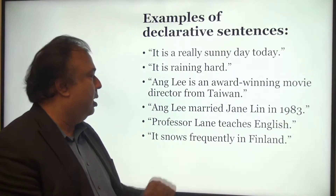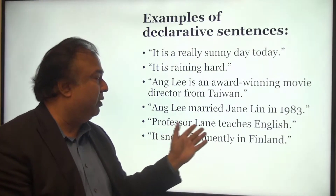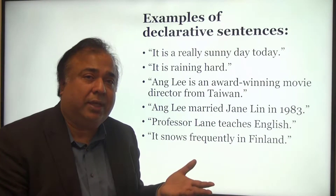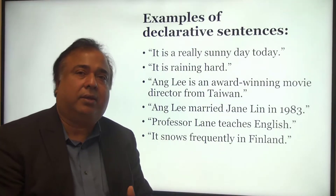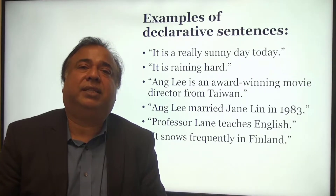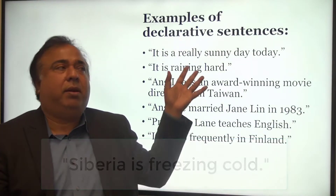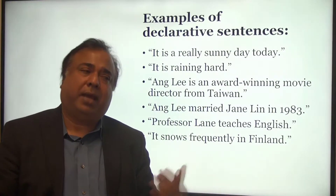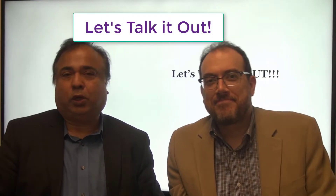That's a declarative sentence. If I said 'Professor Lane teaches English,' it's a fact because he teaches English. It snows frequently in Finland — it's a country where it snows a lot. Or: Siberia is freezing cold, which is true. It's a statement of fact. These are some very good examples of what declarative sentences are. We're going to bring Dr. Lane back into the discussion and talk it out.